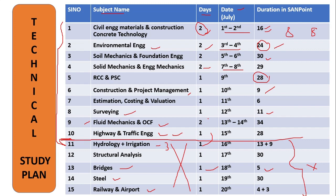If you don't want to study subjects like Railway and Airport, you can leave them — not a problem. You are having five days here, so you can add five more days to other subjects — one more day to FM, one more to other subjects. But in no case should you leave Environmental Engineering, Geotechnical Engineering, SOM, Geotechnical Engineering, RCC, Estimation, and FM — these are very high-weightage subjects which you must study.